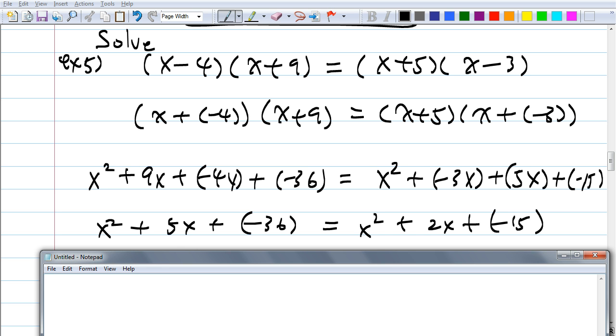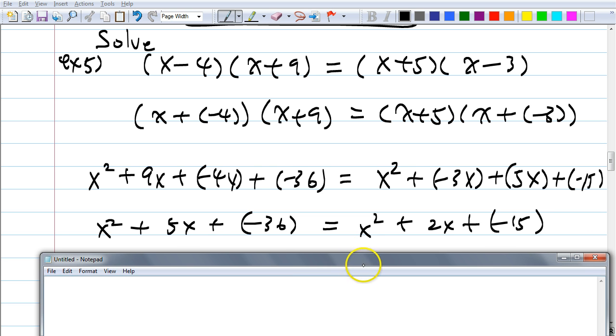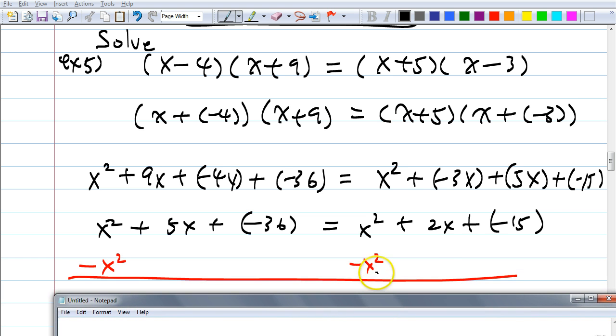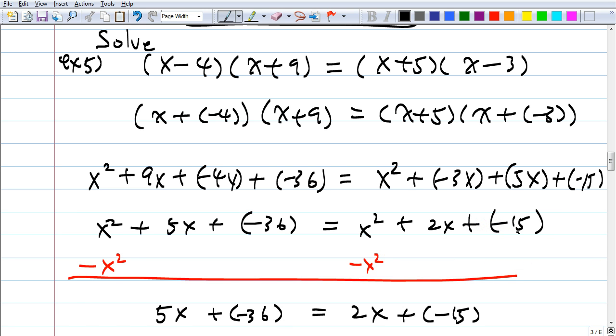What should I do next here? Lucia, what should I do? Yeah, subtract x squared from both sides. Isn't that what we do first? So then they cancel out, right? That's a good thing, because we don't know how to solve the equation with x squared yet. So when I do, I get 5x plus negative 36 equals 2x plus negative 15.